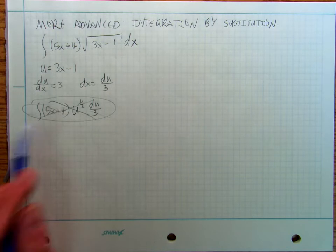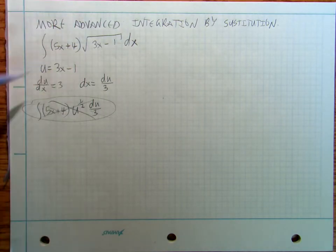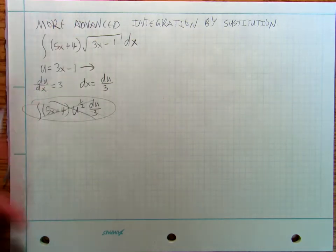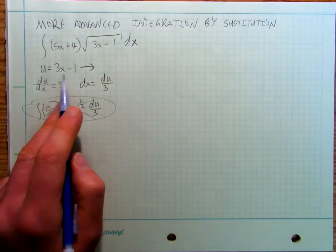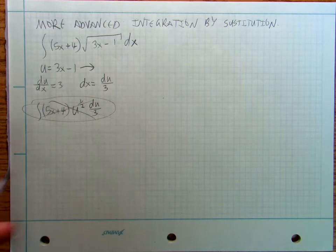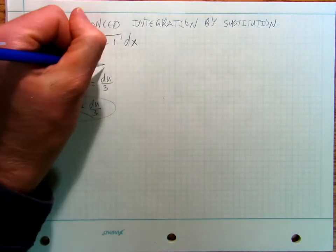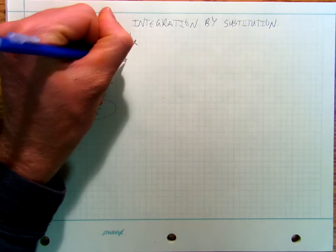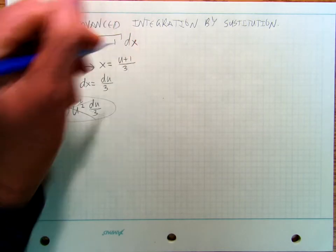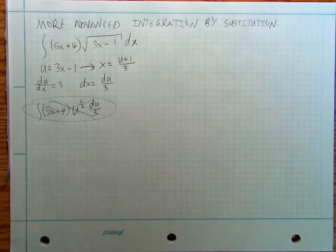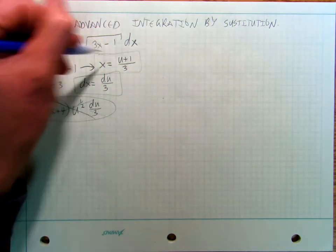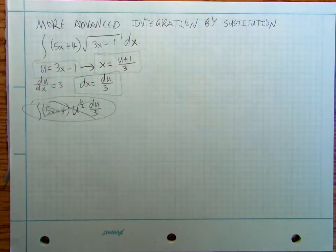But what I can do is I can go and rewrite this. Instead of writing u equals three x minus one, I can rewrite it as x equals u plus one divided by three. And so then I'm going to have these substitutions that I'm going to make.